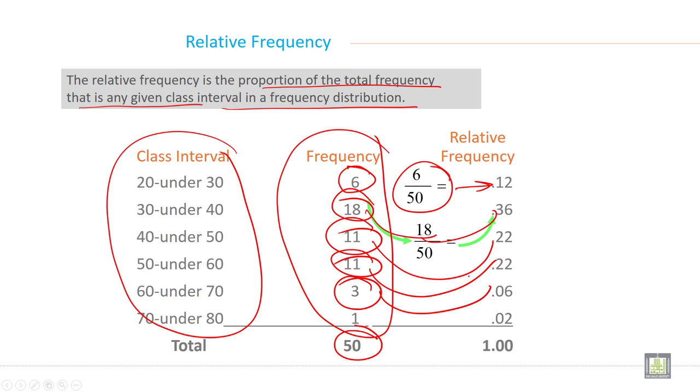Then 3 divided by 50 so it is 0.06 and 1 divided by 50 it is 0.02. If you add the total it must be 1.